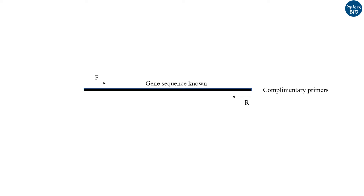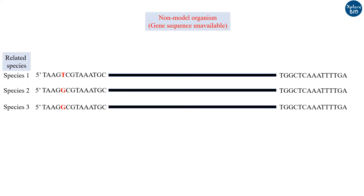If you want to amplify a gene or clone it, you need to have its complementary primer pair, which is easy in case of model organisms with gene sequences available. In case of non-model plants with limited sequence information, you can take the sequence of the target gene from closely related species which belong to the same genus or family. This is done by performing a BLAST homology search.